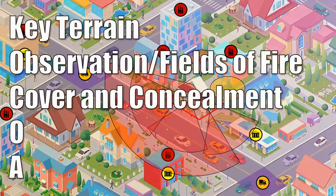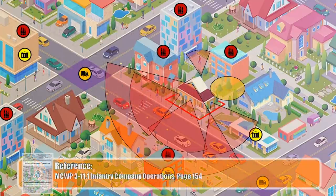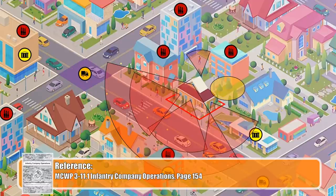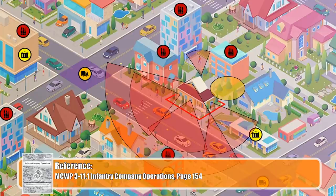Up next is C — cover and concealment. Cover provides a physical barrier between one's self and an adversary, offering some protection from incoming fire. Concealment, on the other hand, relies on camouflage to hide your location — an enemy can't hit what they can't see. Cover can be concealed, like a hidden bunker underground, but concealment itself doesn't provide cover from hostile attacks.